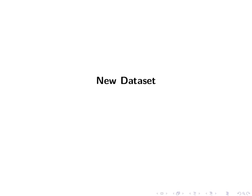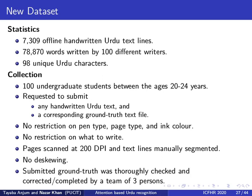We also introduce a new dataset consisting of more than 7,000 handwritten Urdu text lines, containing close to 79,000 words written by 100 different writers. The dataset contains 98 unique characters. One hundred undergraduate students between the ages of 20 to 24 were asked to submit any handwritten Urdu text along with a corresponding ground truth text file. There was no restriction on pen type, page type, ink color, or what to write. Pages were scanned at 200 dots per inch and text lines were manually segmented. The submitted ground truth was thoroughly checked, then corrected or completed as required by a team of three persons.